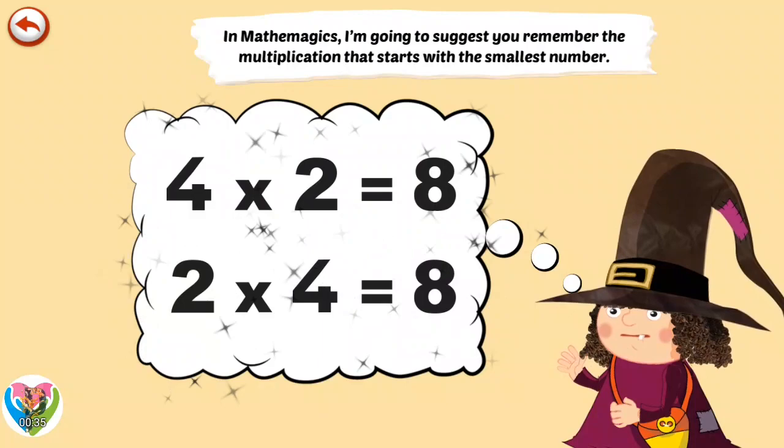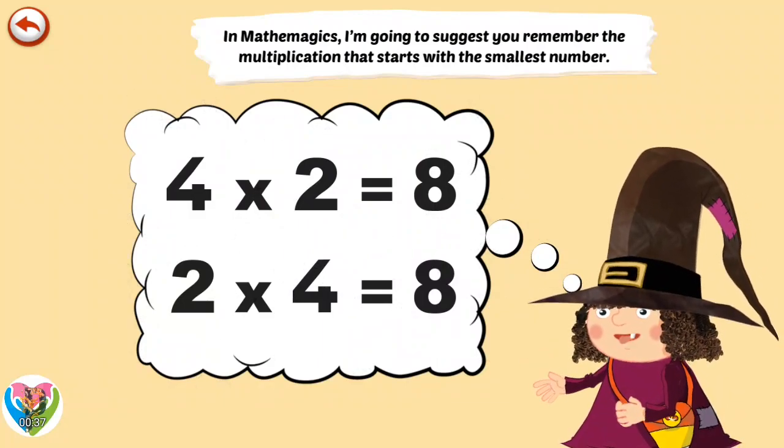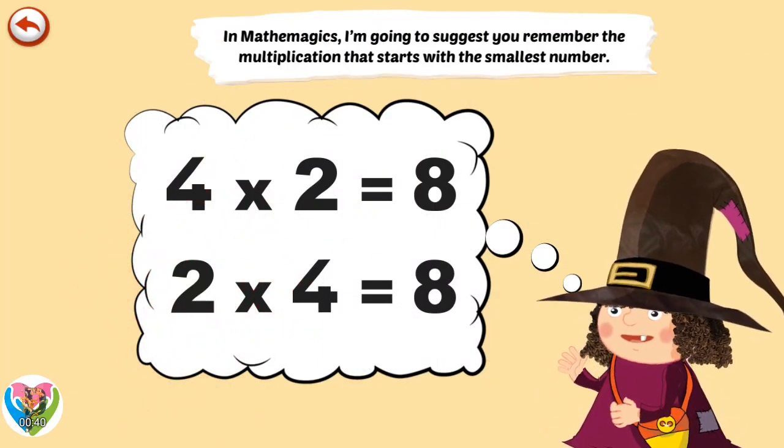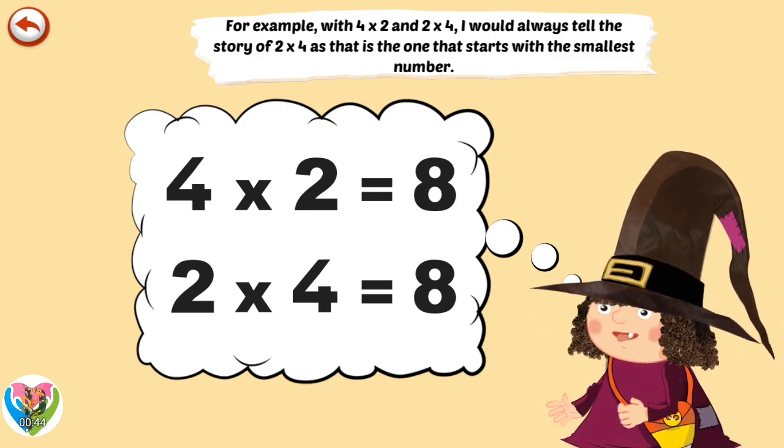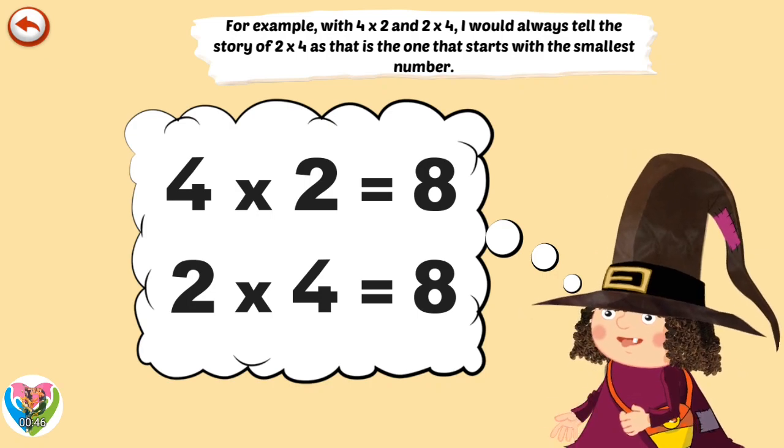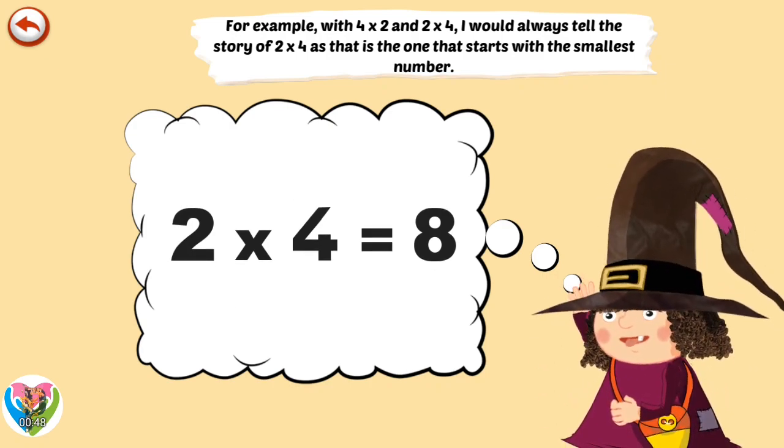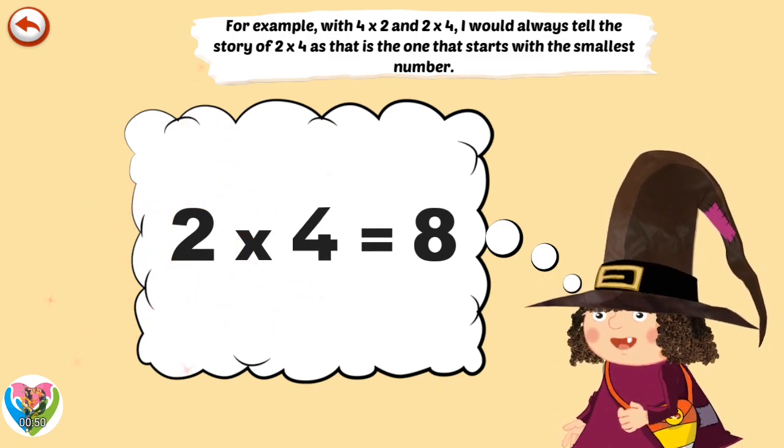In Mathemagics, I'm going to suggest you remember the multiplications that start with the smallest number. For example, with four times two and two times four, I would always tell the story of two times four, as that is the one that starts with the smallest number.